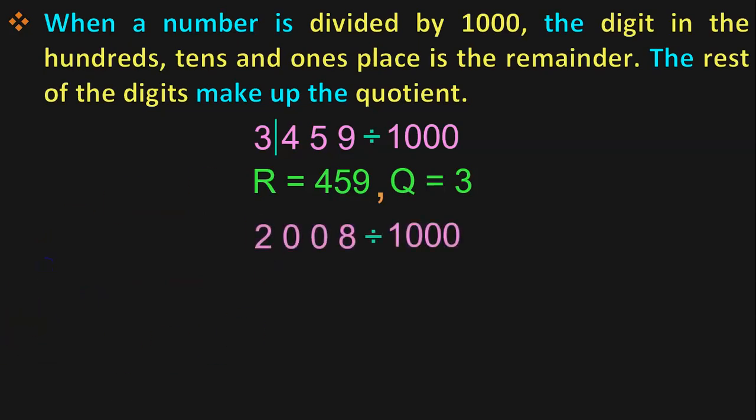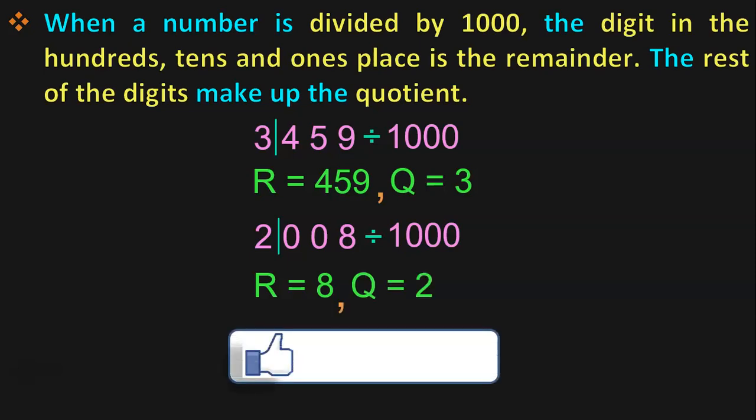Let us take another example: 2,008 divided by 1,000. Where should I draw the line? I should draw the line after the 100's place. The digit in the 100's, 10's and 1's place is the remainder. So, the remainder is 008, or 8, and the quotient is 2.